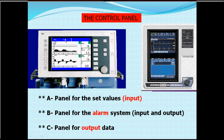This panel is composed of three parts. The first is the panel for set values — you set certain values, whether control variables, phase variables, or alarm data. The second is the alarm system, which is very important and should never be forgotten. Most doctors or therapists unfortunately tend to forget the alarm settings when managing a patient on the ventilator.